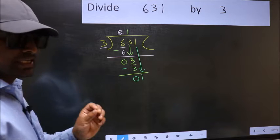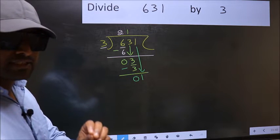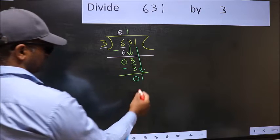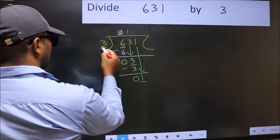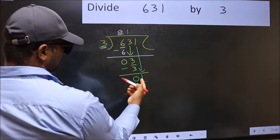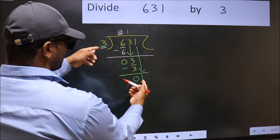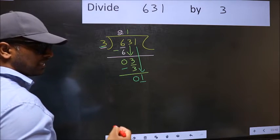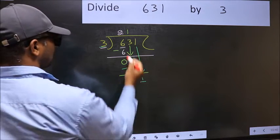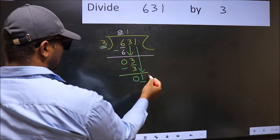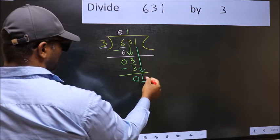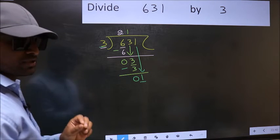the mistake happens and the mistake is this. Here we have 1 and here 3. 1 is smaller than 3. So what many do is they directly put a dot and take 0 here which is wrong.